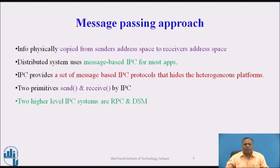In the message passing approach, information is copied from the sender's address space to the receiver's address space. Distributed systems use message-based inter-process communication (IPC) for most applications. IPC provides a set of message-based protocols that hides heterogeneous platforms. Two primitives — send and receive — are used by the IPC. Two higher-level IPC systems are RPC and DSM. In computer science, distributed shared memory (DSM) is a form of memory architecture where physically separated memories can be addressed as one logically shared address space, implementing the shared memory model on a physically distributed memory system.